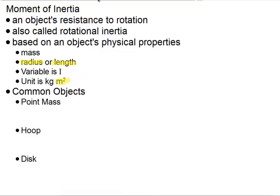The generic form for an object's moment of inertia is I equals some coefficient times mr squared, where m is the object's mass, and r is the object's radius or distance from the axis of rotation.